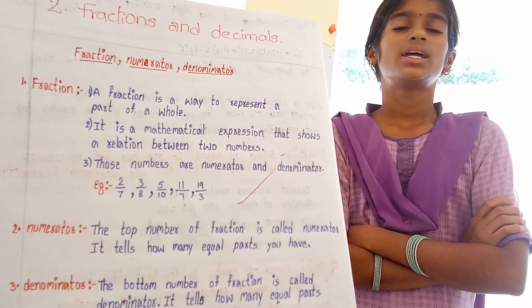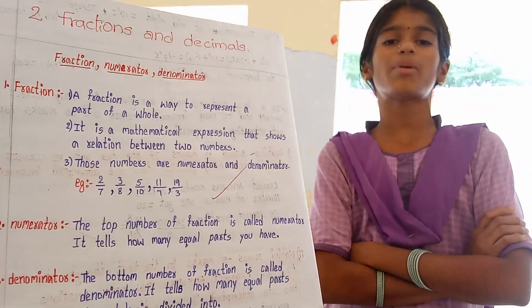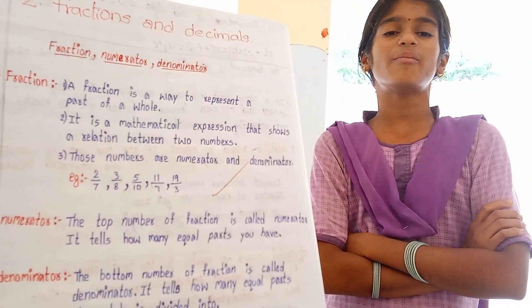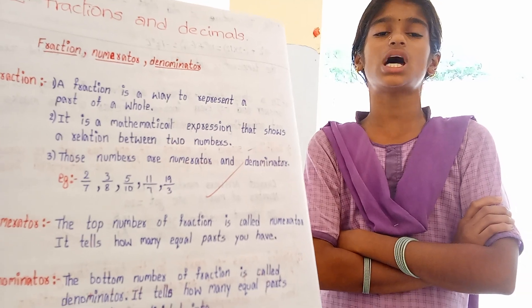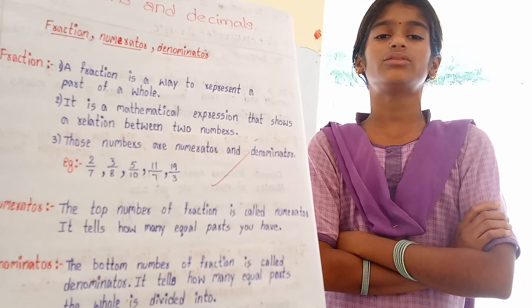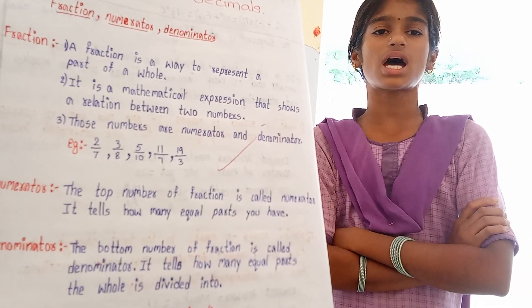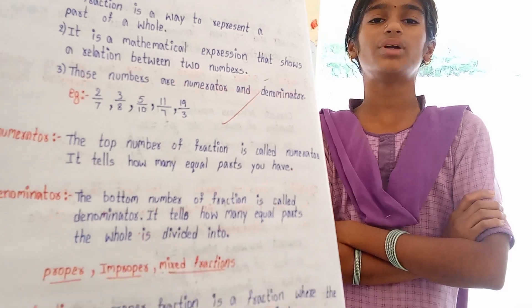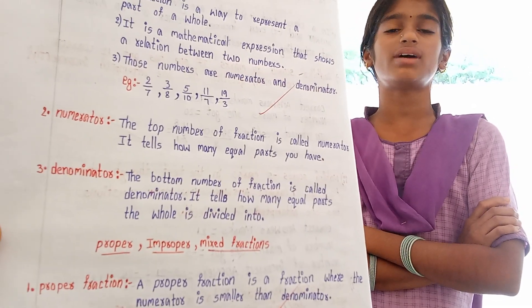Define the fraction. A fraction is a way to represent a part of a whole. It is a mathematical expression that shows a relation between two numbers. Those numbers are numerator and denominator. Example: 2/7, 3/8.